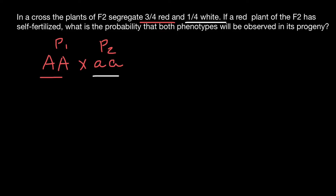The next generation is going to be the F1 generation. What we are going to see in F1 is that all plants are going to be heterozygous. From Parent 1, they can get only the dominant allele, and from Parent 2, they can only get the recessive allele. The phenotype is going to be red for all these plants. When we self-pollinate them, we get the next generation, which we call the F2 generation.